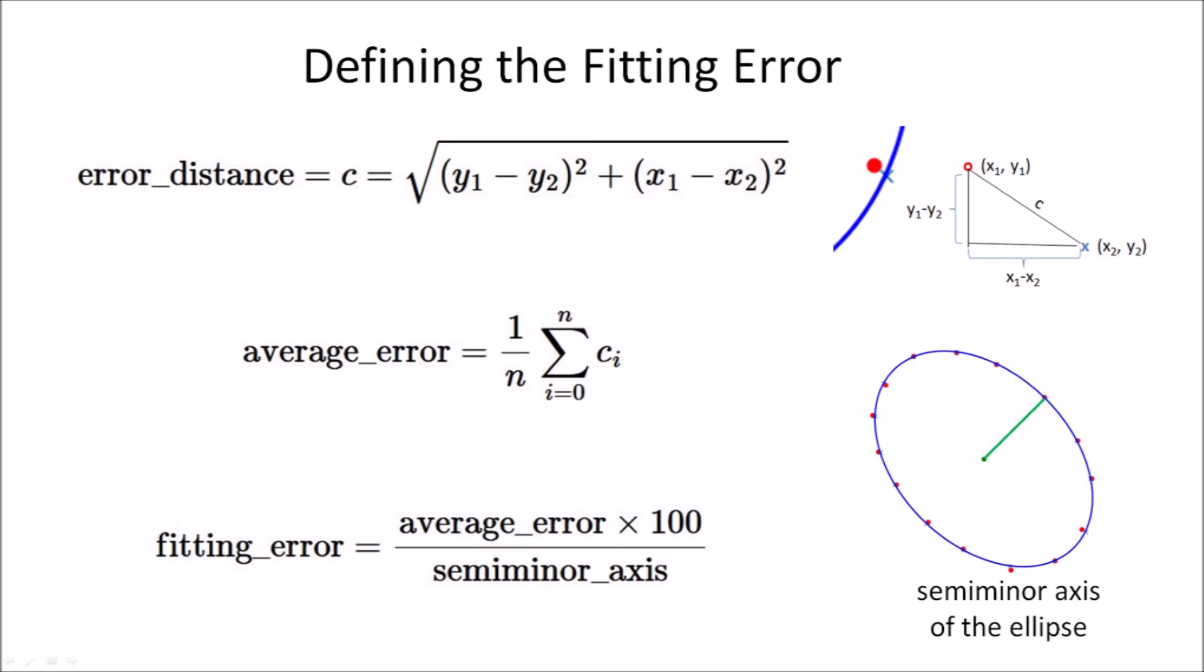I started with the error distance between the observed points and points on the ellipse. From this I calculated the average error, which is the sum of all the error distances divided by the number of points. I finally defined the fitting error as the percentage of the average error relative to the semi-minor axis of the ellipse, which is half the width of the ellipse. Dividing by the semi-minor axis basically scales the average error to a proportion of the ellipse to allow comparisons of the fitting errors for ellipses of different sizes.